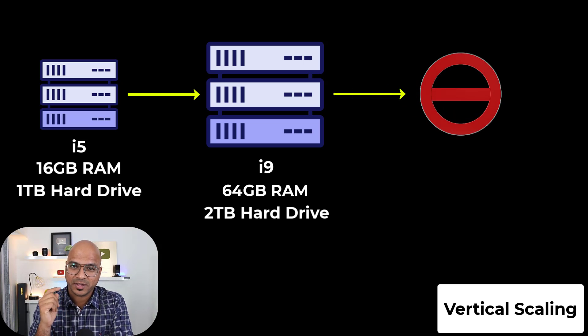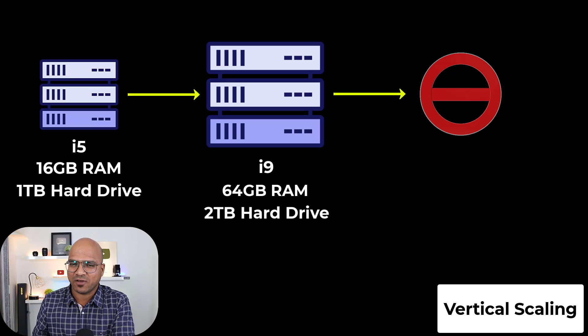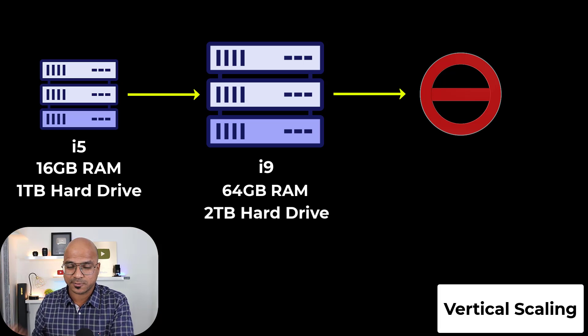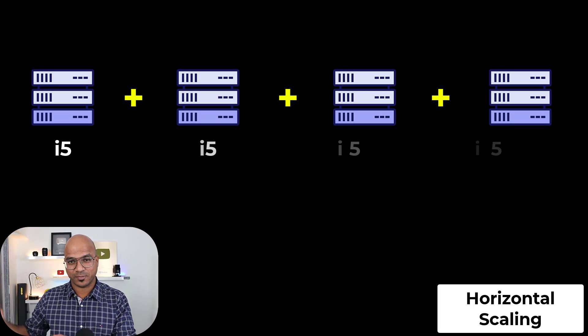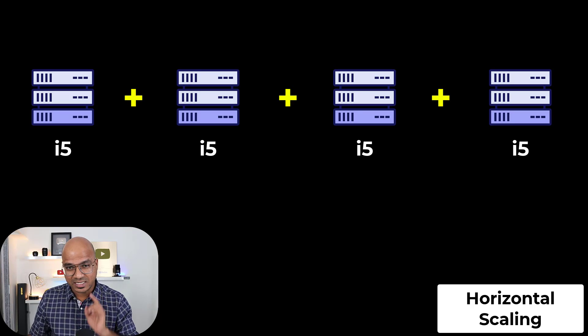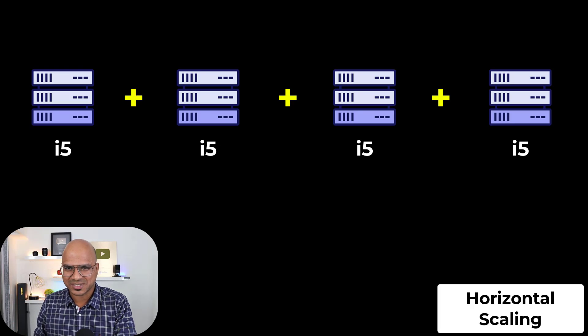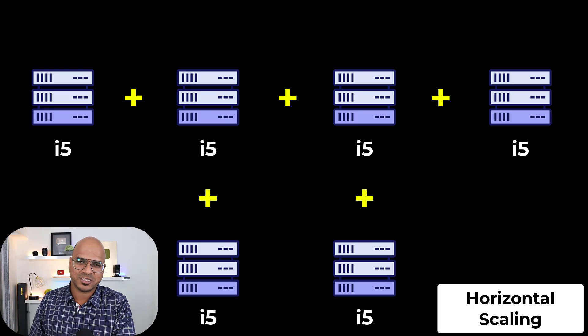Now the problem is there's a limit to vertical scaling — till what point will you go? We don't have a CPU more powerful than what's available, and there's a limit for any kind of CPU. But what if you go for horizontal scaling, where you're not dependent on one server? You can have multiple small servers — multiple i5 machines. The advantage is it's easier to scale out, and in the future if you want more capacity, you just add more machines. That's where they came up with the technology called NoSQL databases.